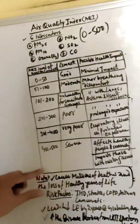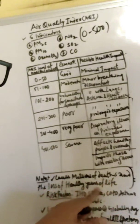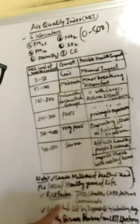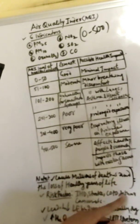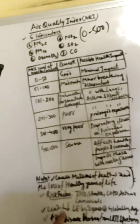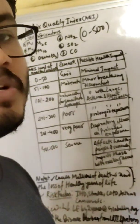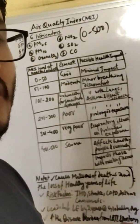Note that it causes millions of deaths and the loss of healthy years of life. Risk factors include ischemic heart disease, stroke, COPD, asthma, and cancer. It decreases our life expectancy by two years on average on a global level.